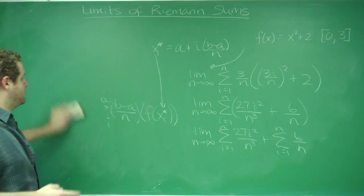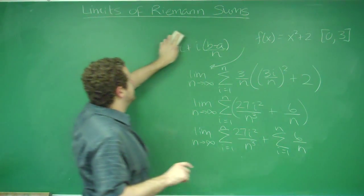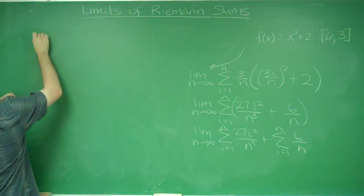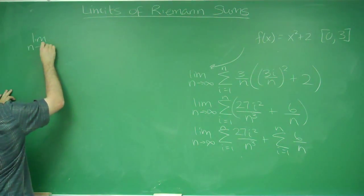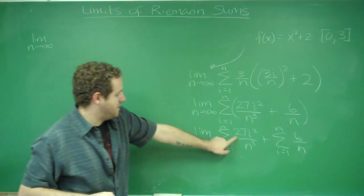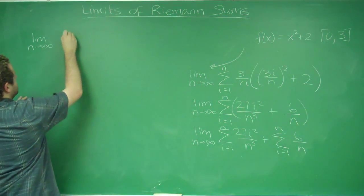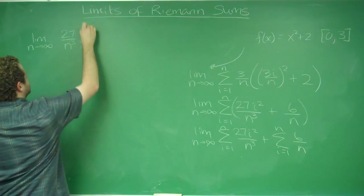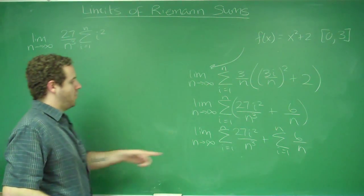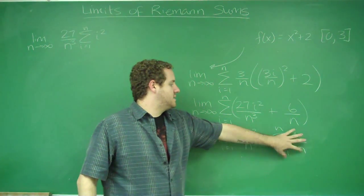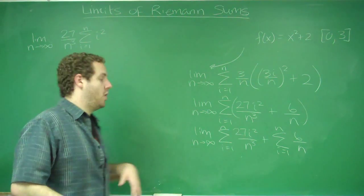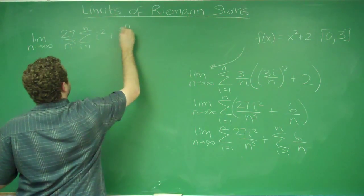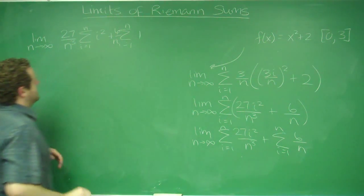Since i is the variable in the sum, everything that's not an i can come in front of the sum. The 27 and n cubed come in front, giving us 27 over n cubed times the sum from i equals 1 to n of just i squared. In the other term, the 6 and the n come out and we're just left with 6 over n times the sum of 1.